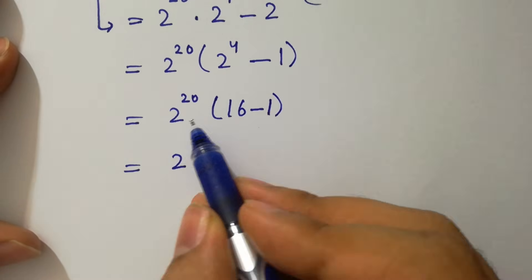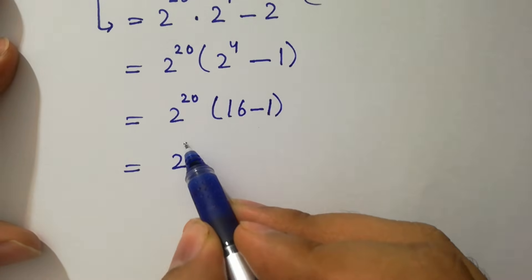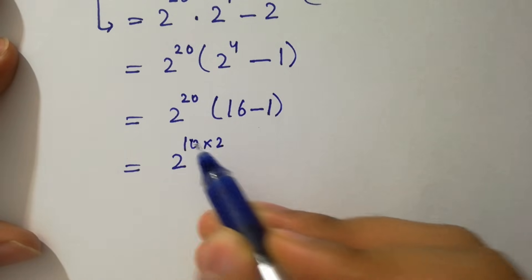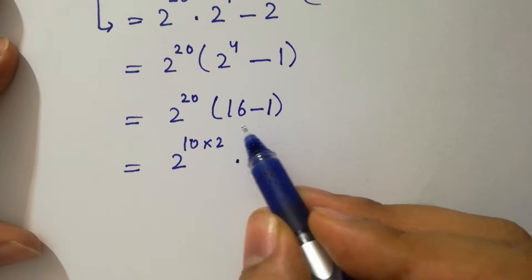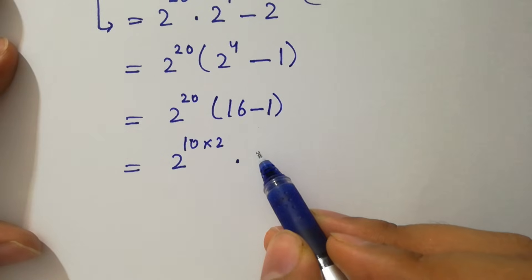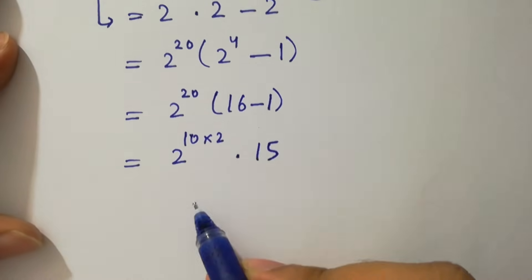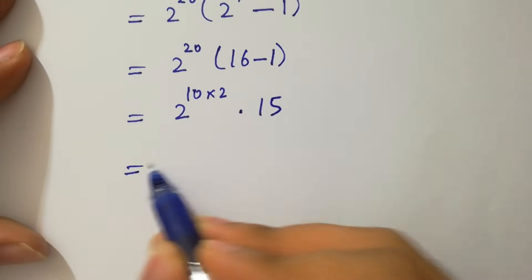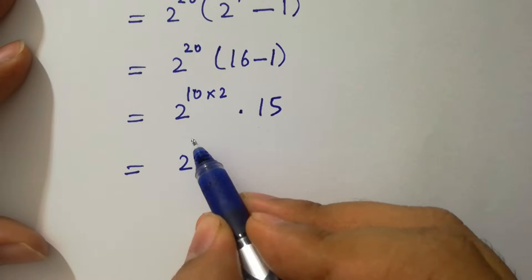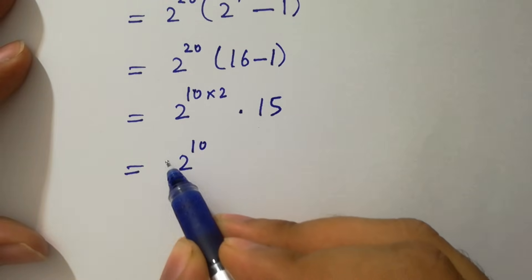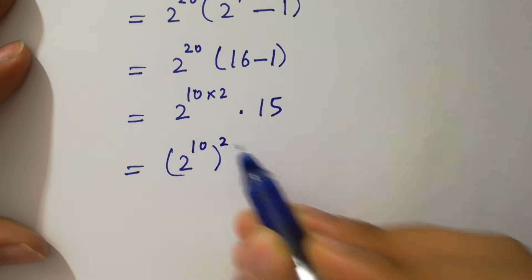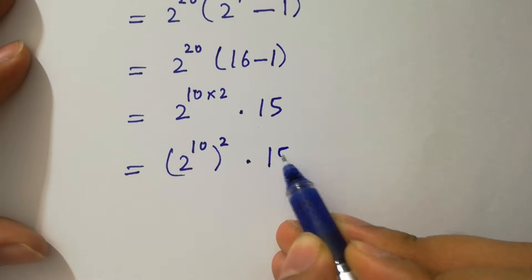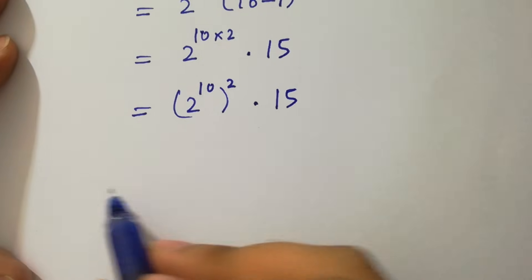So we have 2 to the power 20, which is the same as (2 to the power 10) squared, times 15. And 16 minus 1 is 15, giving us (2 to the power 10) to the whole power 2, times 15.